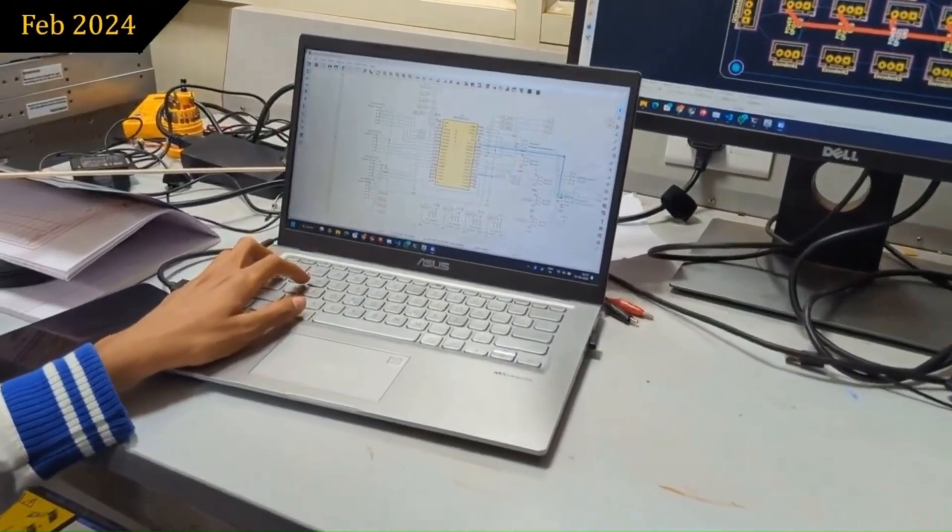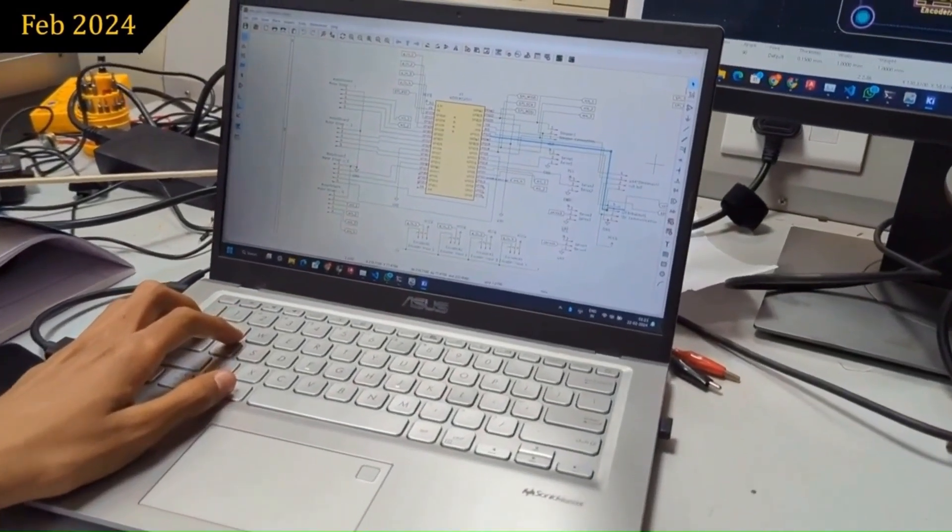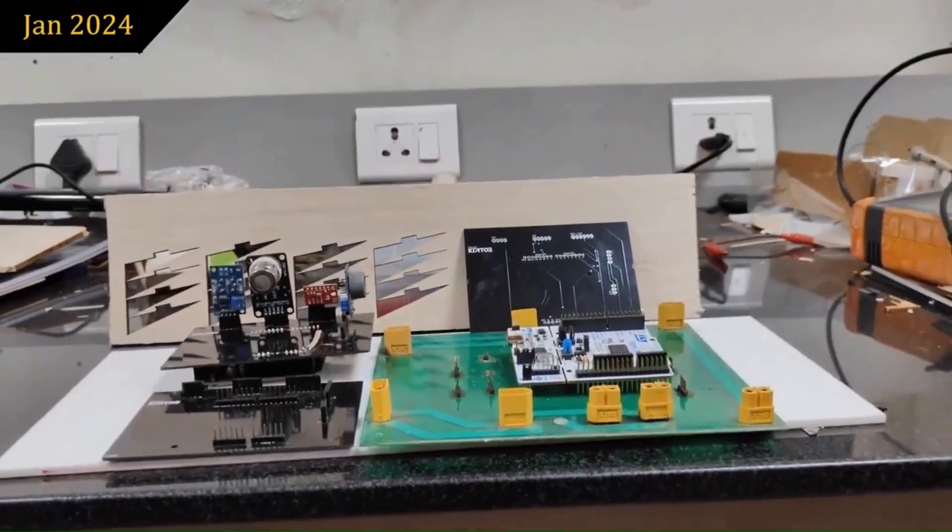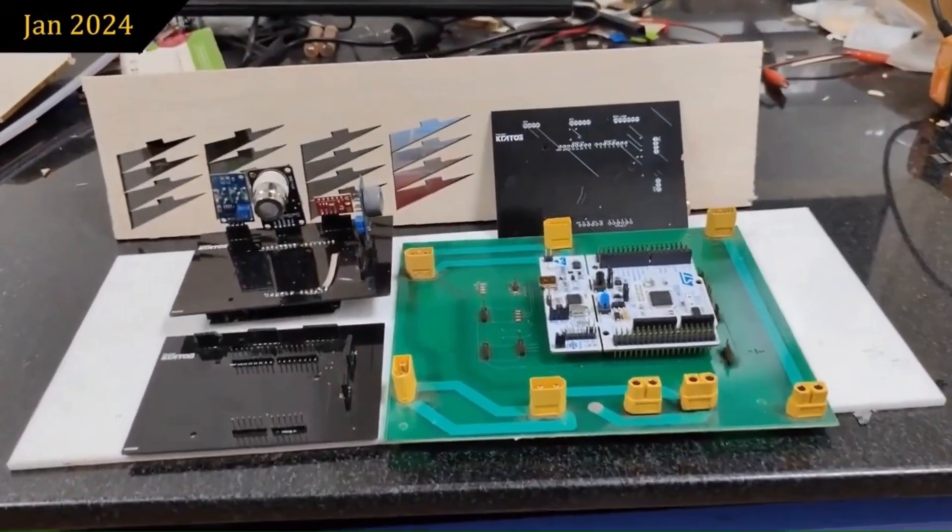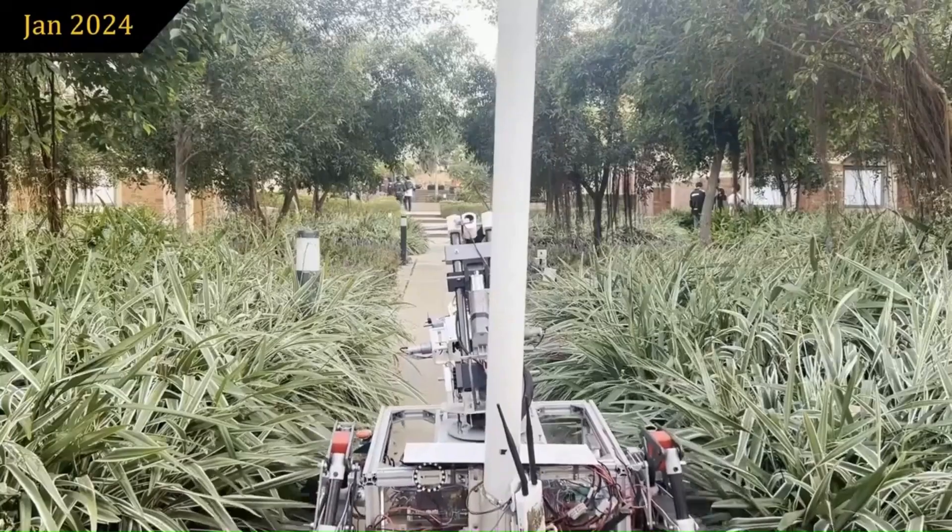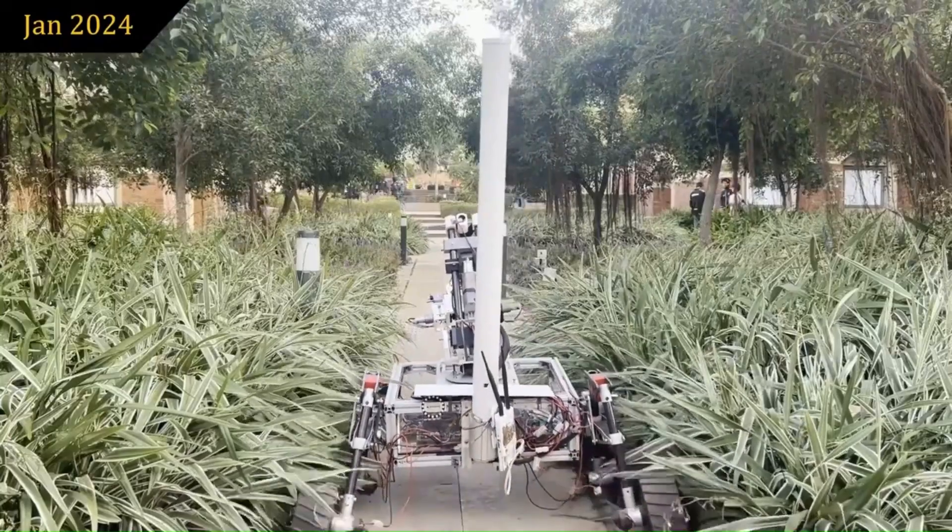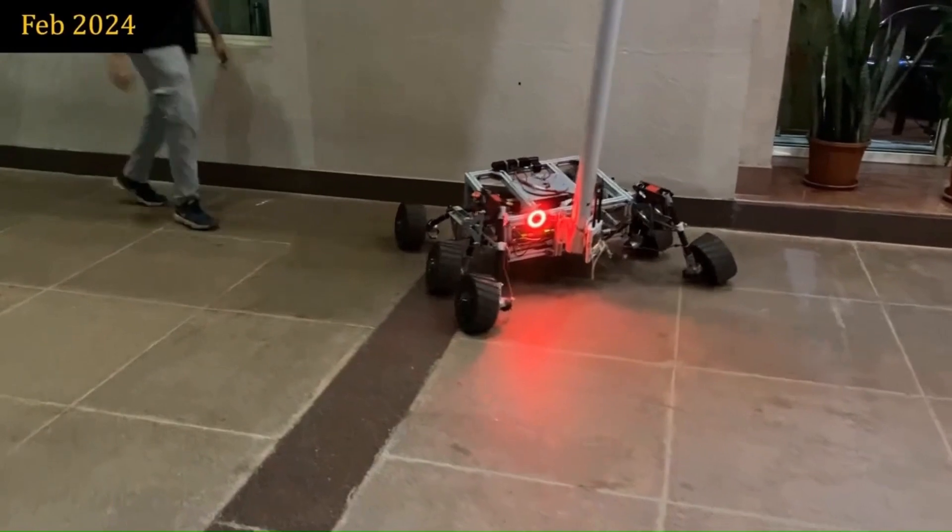New PCBs meeting specifications of arm, drive and science subsystems were designed and manufactured in-house, making the electronics onboard modular and connections streamlined. The rover is tested for 90 minutes of continuous traversal. Killswitch is employed to shut down the rover in case of emergency.